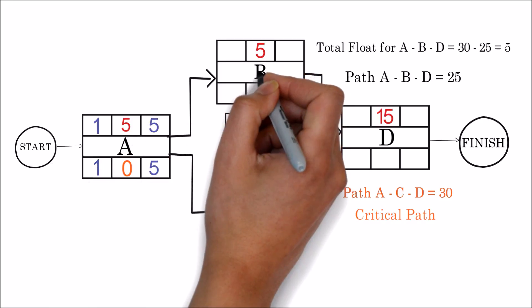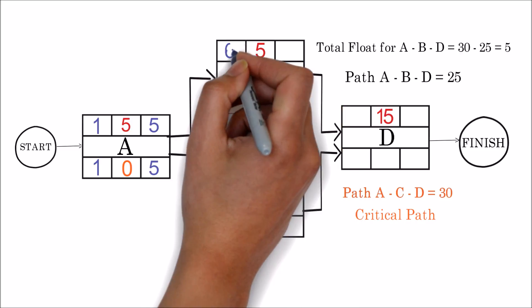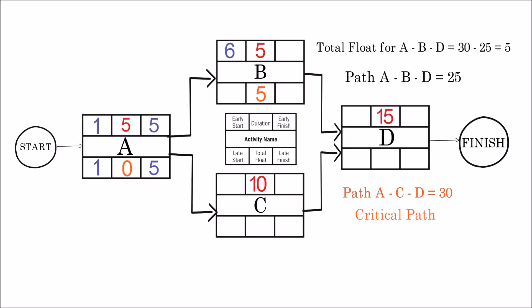Let's move on the path and go to activity B. The early start day for this is 6 which comes after end of activity A. Adding the float of 5 with this, we can calculate the late start date which is 6 plus 5, that is equal to 11. Early finish date is calculated by adding the duration of 5 with the early start date 6, and the value is 10. Late finish date can be calculated by adding duration of 5 with late start date 11, and the value is 15.